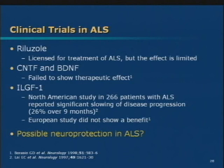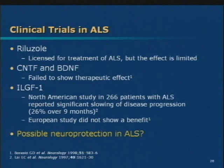CNTF and BDNF are both growth factors — TF stands for trophic, meaning it helps cells live. BDNF and CNTF can help protect neurons in various circumstances, especially in animal models, but unfortunately they didn't seem to help in ALS. Insulin-like growth factor is another factor that has been tested — one study in North America seemed to show some benefit, but another study in Europe didn't, so the jury's out. Like Alzheimer's disease, there is some evidence for a modest degree of neuroprotective therapy available for a disease like ALS.